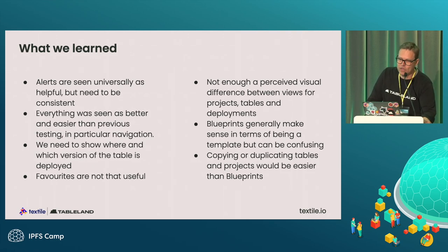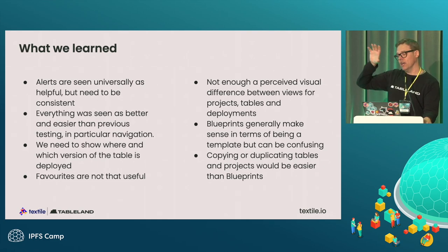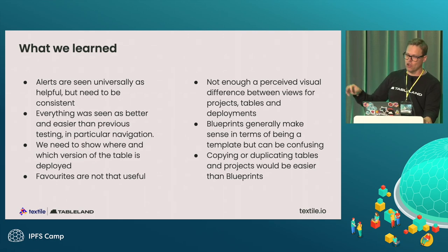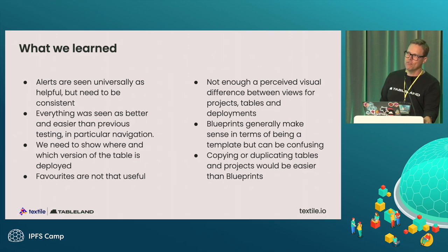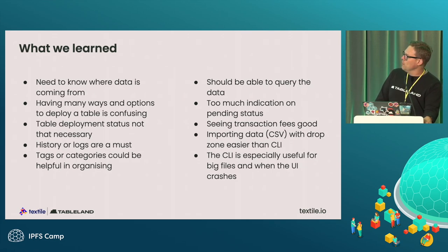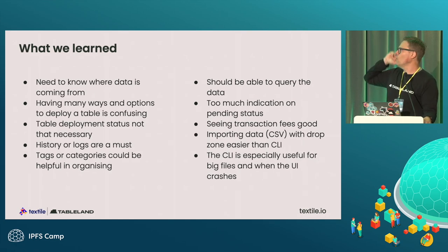We learned tons. Alerts are great but need to be consistent — we weren't necessarily there. Everything was seen as better than previous, so we kept tweaking. Favorites — we had those at one point, not really that useful. One of the key things is we learned what to throw away. Blueprints, which was our big bet, seemed to make sense but wasn't the greatest thing in the world. Maybe we should be able to duplicate and do more GitHub-style actions instead. People just need to know different ways of doing things, but having lots of options for one action isn't helpful. History is important.